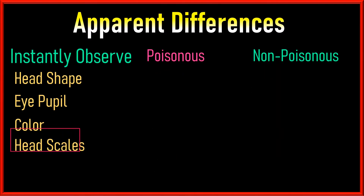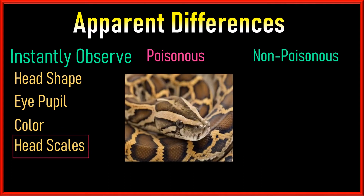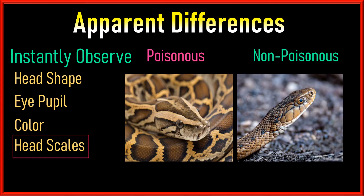Finally, if possible, look at the scales adjacent to the head, below the eyes. If they are smaller — similar in size to the scales on the upper side of the head — the snake is venomous. If the below-eye scales are larger than the upper-side scales, the snake might be non-venomous, but safety is still advised.